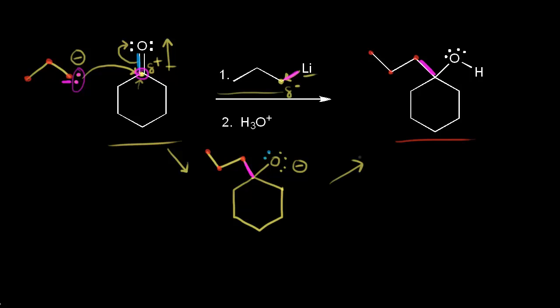The second step: we have a source of protons — we're using the hydronium ion, H3O+, with a positive formal charge on the oxygen. The second step of this mechanism is acid-base chemistry — a proton transfer. This negatively charged oxygen on our intermediate acts as a base and takes a proton. This lone pair of electrons takes a proton from H3O+, leaving these electrons behind on the oxygen. The electrons in red form this bond, taking the proton, and we form an alcohol as our final product.